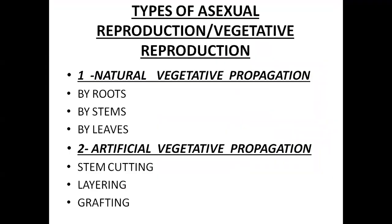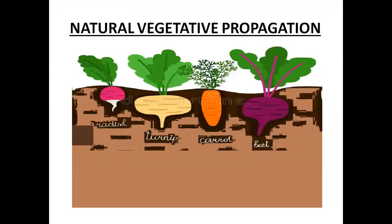Asexual reproduction is of two types: natural vegetative propagation and artificial vegetative propagation. Propagation means increasing in number, which is similar to reproduction. Let's learn about natural vegetative propagation. As the name makes it clear, it occurs naturally.